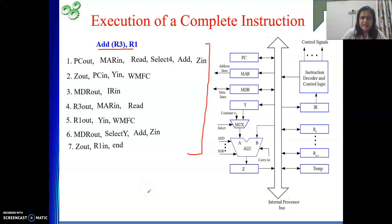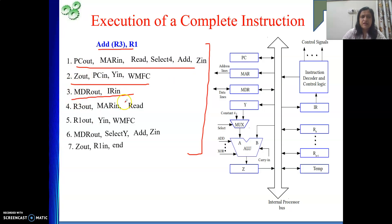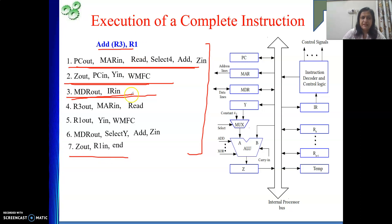We need to generate these signals in a proper sequence — in step number 1, certain signals are generated; in step number 2, another signal; in step number 3, another signal. By analogy, just as in an engineering career you study different subjects in different semesters to complete your B.Tech, the instruction execution proceeds step by step. Our aim is to generate these signals, and the hardware control unit will do that.